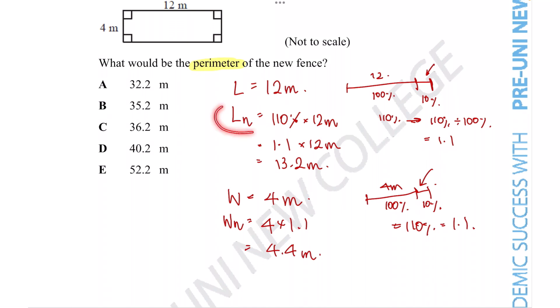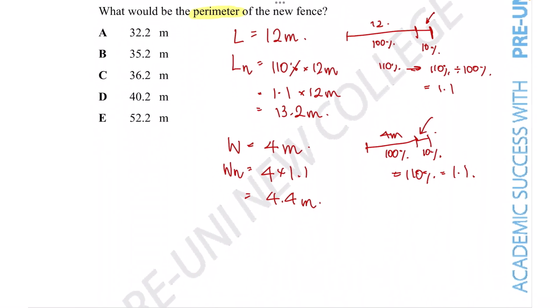Now that we know the length and width of the new fence, we've got all the pieces of the puzzle to figure out the perimeter. For the perimeter of a rectangle, we can multiply the length and the width by 2 and add those two together.